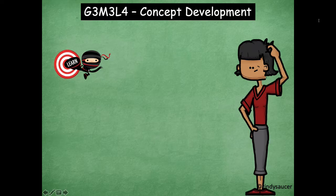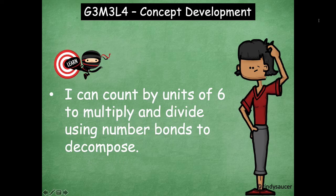Hey boys and girls, it's Mrs. Walker. For our lesson today we're going to talk about how we can multiply with units of six. We're going to multiply and divide. We're going to talk about how we can use number bonds and skip counting to help us solve those problems. So our learning goal for today says I can count by units of six to multiply and divide using number bonds to decompose.